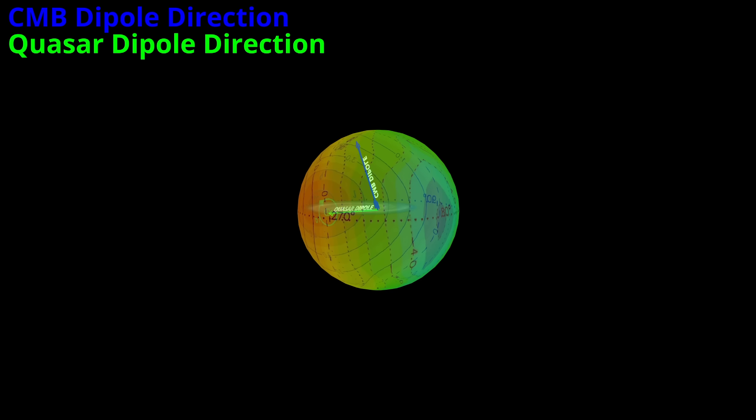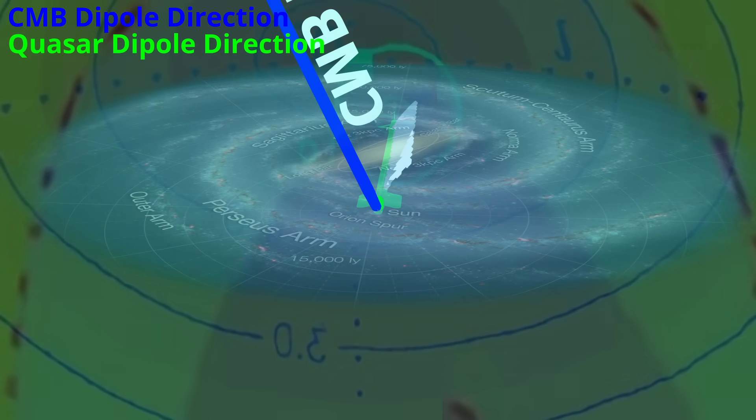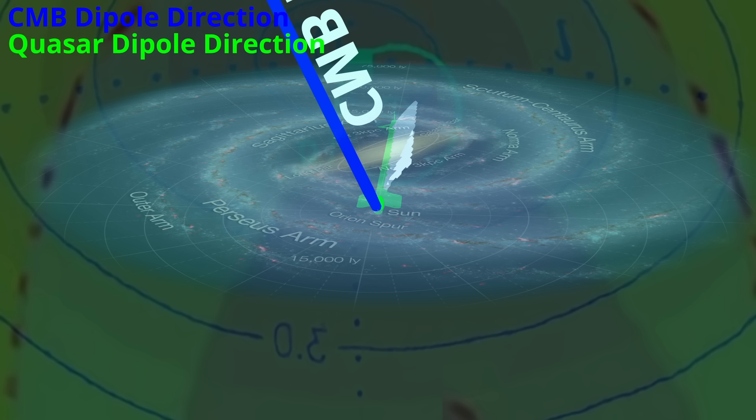The assumption of homogeneity and isotropy that underpins the entire Big Bang model. And since the dipole axis points almost directly at the galactic center, it would make our own vantage point look suspiciously special.